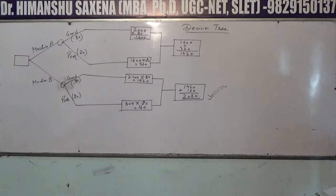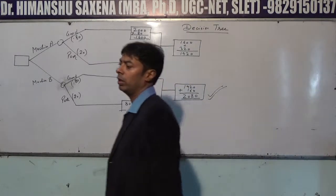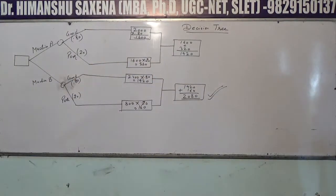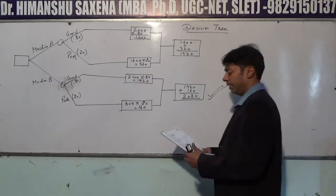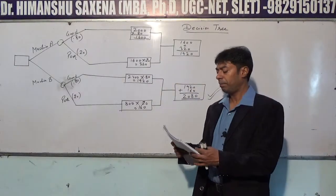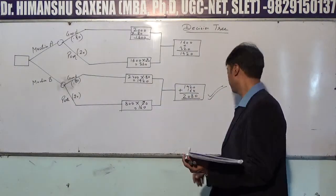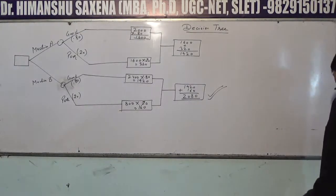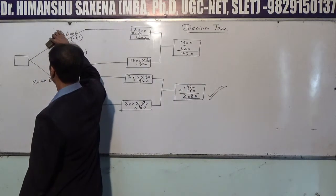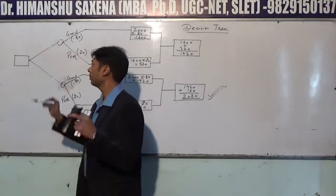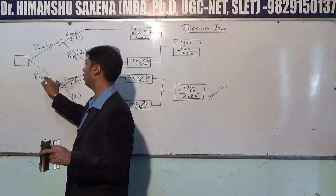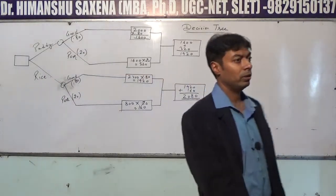Now look at problem number 23 in your handouts. In this question, there are again two alternatives. Mr. X has to decide whether to stock paddy or rice crop. Either he can stock paddy or he can stock rice — these are his two alternatives.